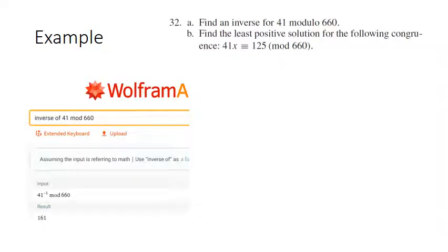Now that we've theoretically done one example by hand, let's do the rest by computer. For homework problem 32, part a asks: find an inverse for 41 modulo 660. The result from Wolfram Alpha is 161. The reason they say 'an inverse' is because anything congruent to 161 modulo 660 would also work — but 161 is certainly the least positive inverse.